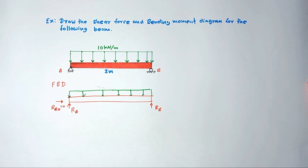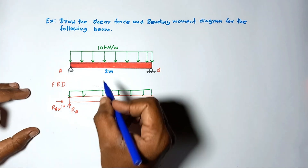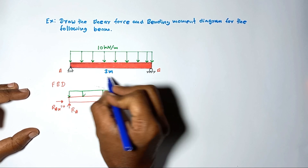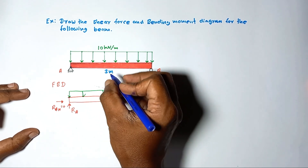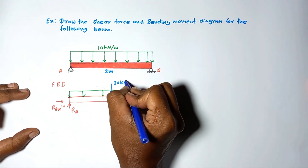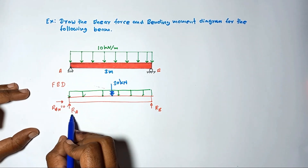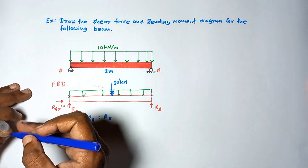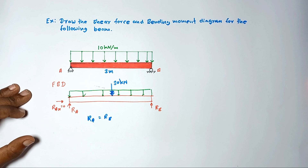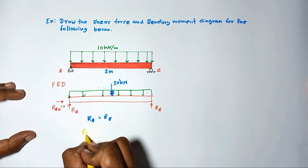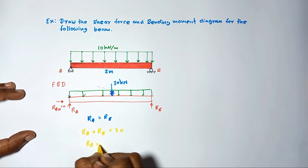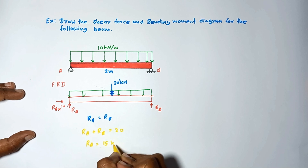First of all we need to determine R_A and R_B. The total load acting on the beam is equal to 30 kN. The resultant of all the parallel forces due to the distributed load is equal to 30 kN. Considering the symmetry of the loading diagram, R_A is equal to R_B, so R_A plus R_B equals 30, giving R_A equal to 15 kN.